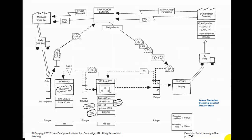The customer orders parts, they take it out of shipping — the shipping supermarket here. You see the opening of the Kanban card, you make it and fill it back up, and you send one here and send one back there. That's called customer pull — customer pull scheduling.